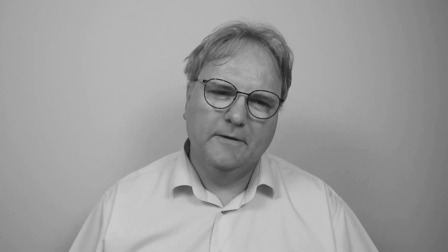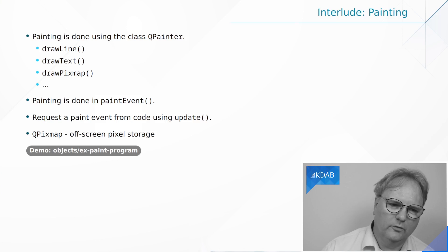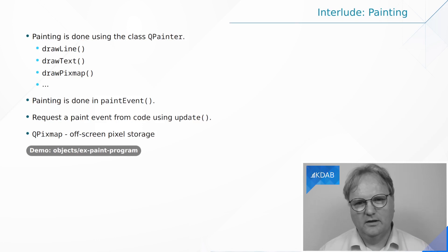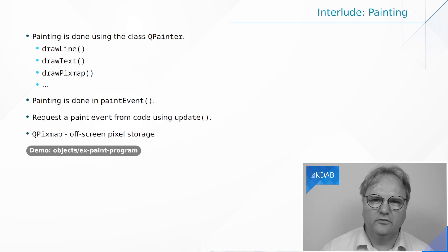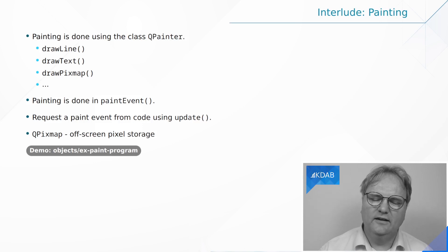The second example I'd like to show on event handling involves painting with the cursor on the screen. For that, I need a small interlude to tell you just a tiny bit about painting in Qt — we'll get back to it in much more detail later. What you basically do is paint using a class called QPainter. On the QPainter class there are methods like drawLine(), drawText(), drawPixmap(), and so on. But you're only allowed to draw on widgets inside the virtual method called paintEvent(). paintEvent() is an overridden event handler like mousePressEvent() and so on — it's something Qt calls on you. You can ask Qt to call that on you by calling update().